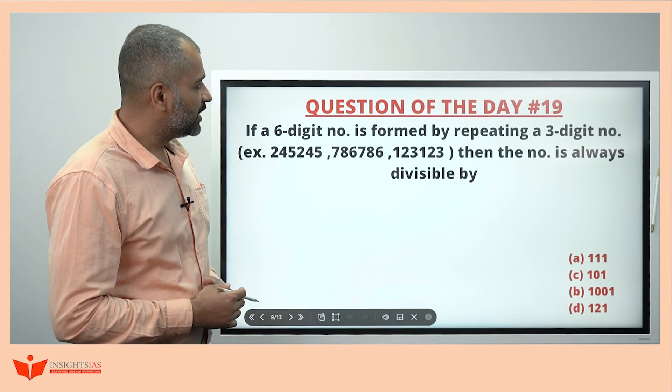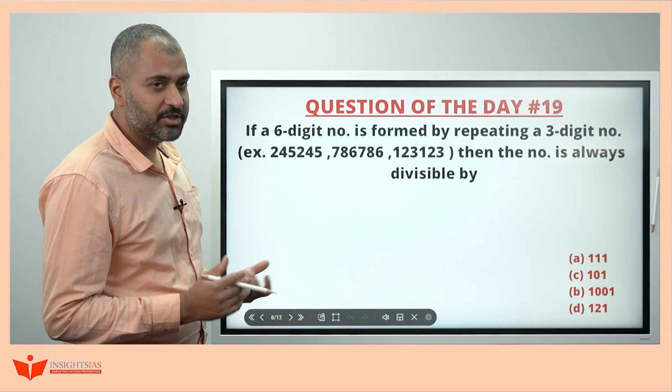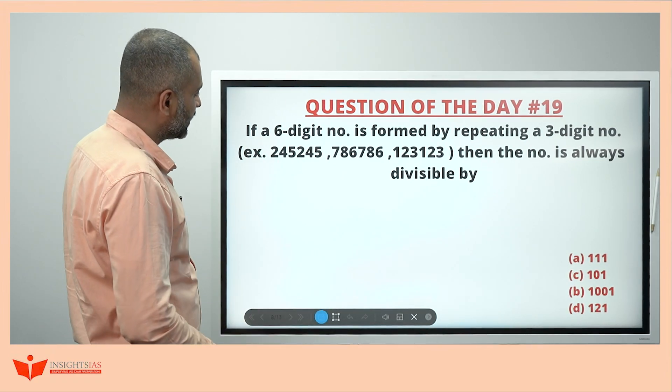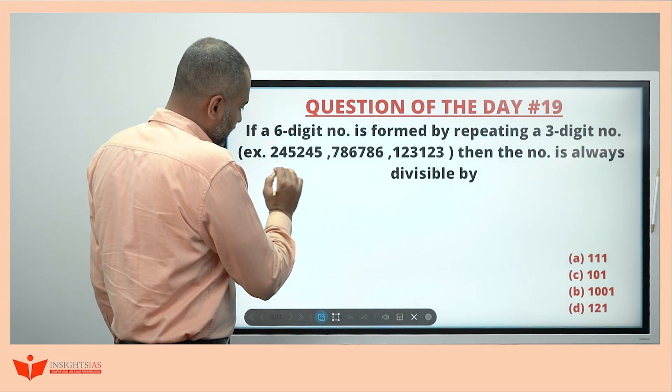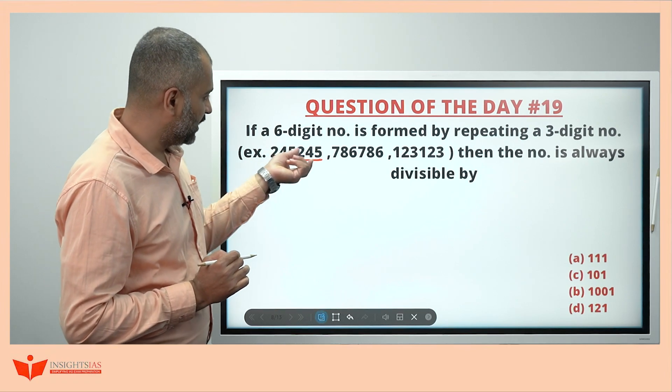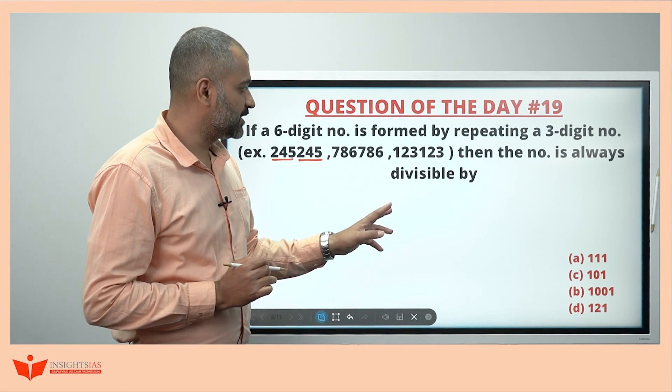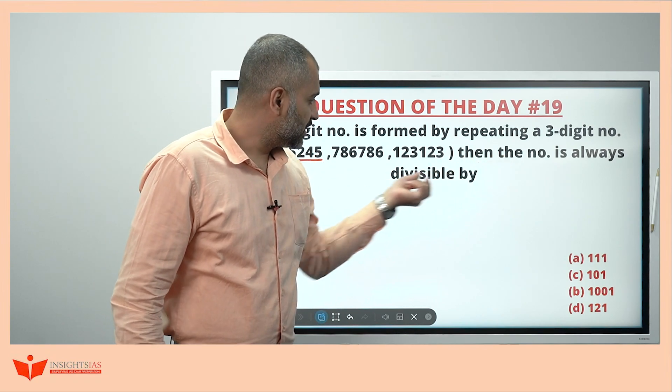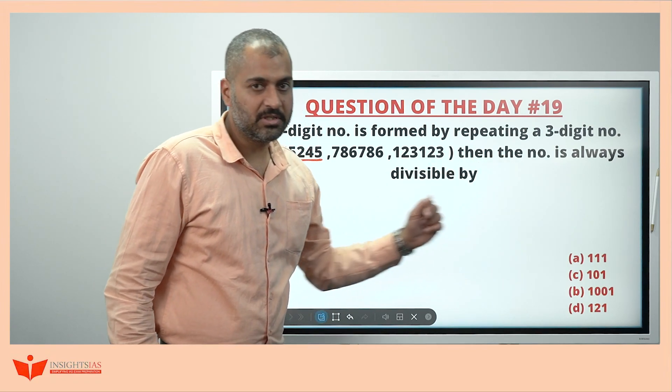If a six-digit number is formed by repeating a three-digit number—okay, example is also shown here. Three-digit numbers, 2, 4, 5, 2, 4, 5. If you repeat, it becomes a six-digit number, 786, 786, 1, 2, 3, 1, 2, 3. These kind of numbers are always divisible by which of these numbers.